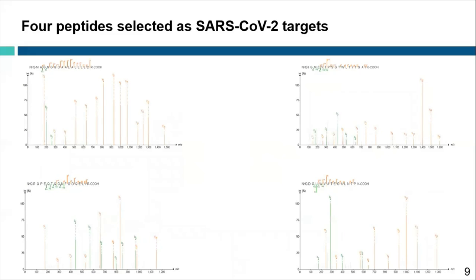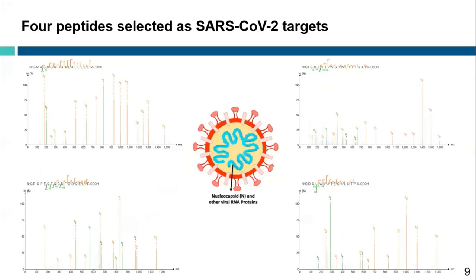Ultimately, we determined that four peptides scored highly in PEP query, passed manual evaluation, and were present in the majority of clinical datasets. These peptides are presented here, where you can see the quality of their MS2 spectra. These peptides correspond to the nucleocapsid protein, which serves to package the viral RNA within the capsid. This highly abundant protein is also the gene most commonly amplified during QRT-PCR diagnosis of COVID-19, making MS detection of SARS-CoV-2 using these peptides as targets a complementary methodology to pre-existing assays.